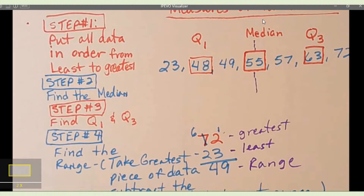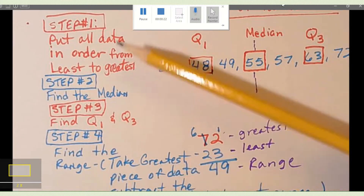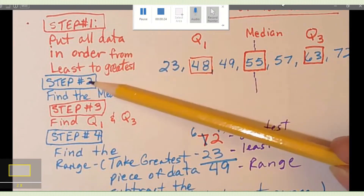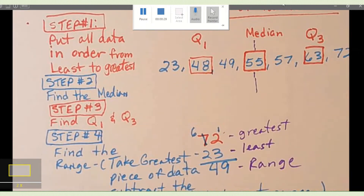Okay students, we're going to continue with our measures of variation. What I've decided to do that might help you out is a step-by-step tutorial, because there are several different steps to take to gather the measures of variation. As you remember, I had step one, step two, step three, and step four on the previous one, so I'm going to go through the steps with you and we're going to do both of the problems that were homework.